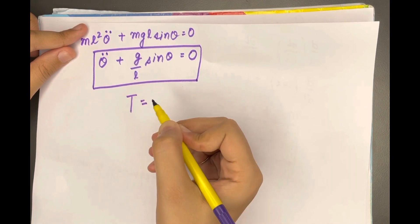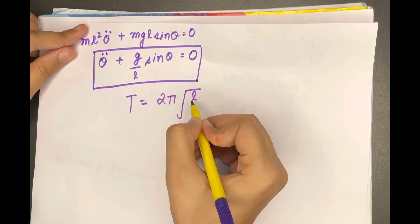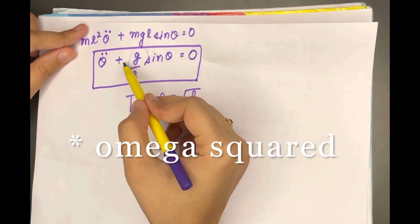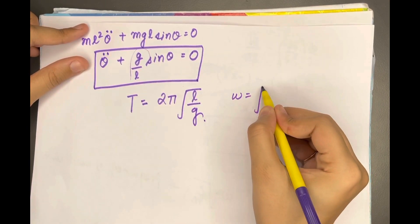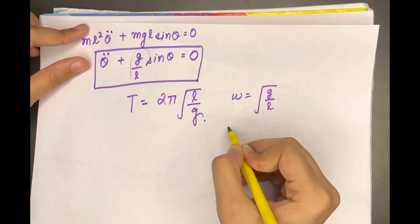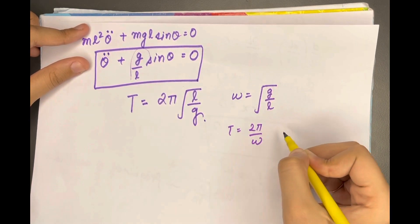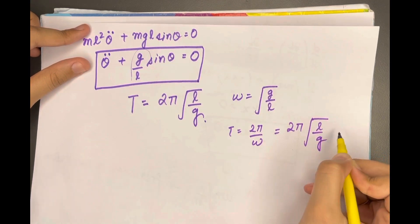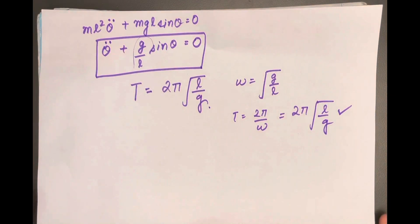The time period of oscillation is T equals 2π√(l/g), because ω equals √(g/l) and the time period equals 2π/ω, which gives 2π√(l/g). Before you leave, please subscribe to my channel and don't forget to press the bell icon.